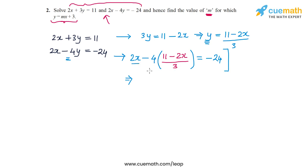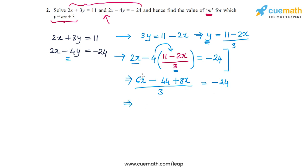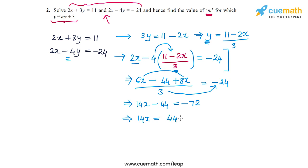We have 2x and a term with denominator 3, so taking the LCM we get (6x minus 4 times the numerator), which gives (6x minus 44 plus 8x) divided by 3 equal to minus 24. That gives us 14x minus 44 equals minus 72 after cross-multiplying.